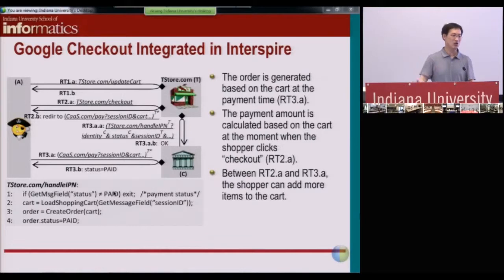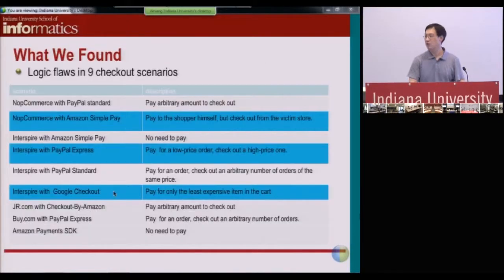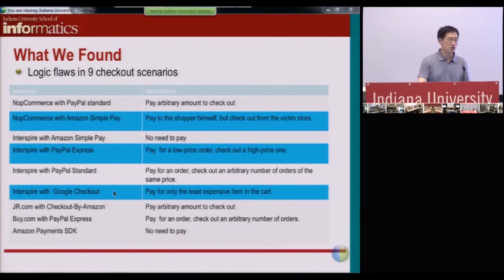In computer science, that's called a Time-of-Check Time-of-Use (TOCTOU) problem — a distributed TOCTOU problem. It happened on this side, and we looked at a lot of web stores. The problem is so pervasive. In many cases, we pick up a web service integration, take a close look at it, and there's a good chance we can find some loophole. We notified all these web stores to fix the problem, but it is very difficult to get right.